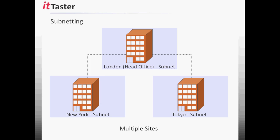Organisations with multiple sites spread over different geographical locations still need their IT systems to be able to communicate. By dividing an IP network into subnets, each site can be assigned its own subnet. Routers are then able to route network traffic between the different sites.